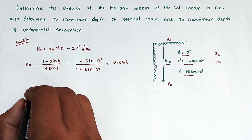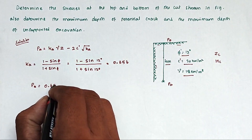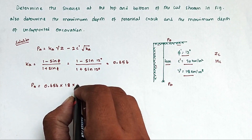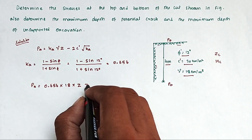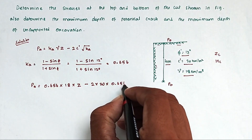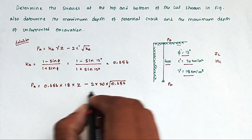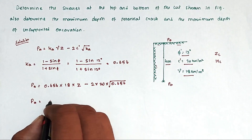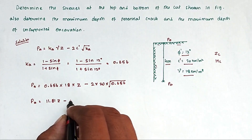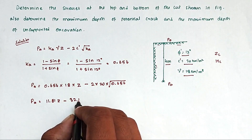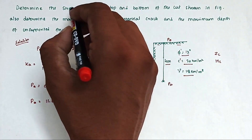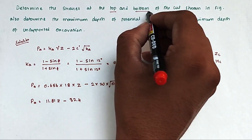Now we substitute all the values into the PA formula. PA = 0.656 × 18 × Z − 2 × 20 × √0.656. Solving the constants: 0.656 × 18 = 11.81, and 2 × 20 × √0.656 = 32.4. So PA = 11.81Z − 32.4.